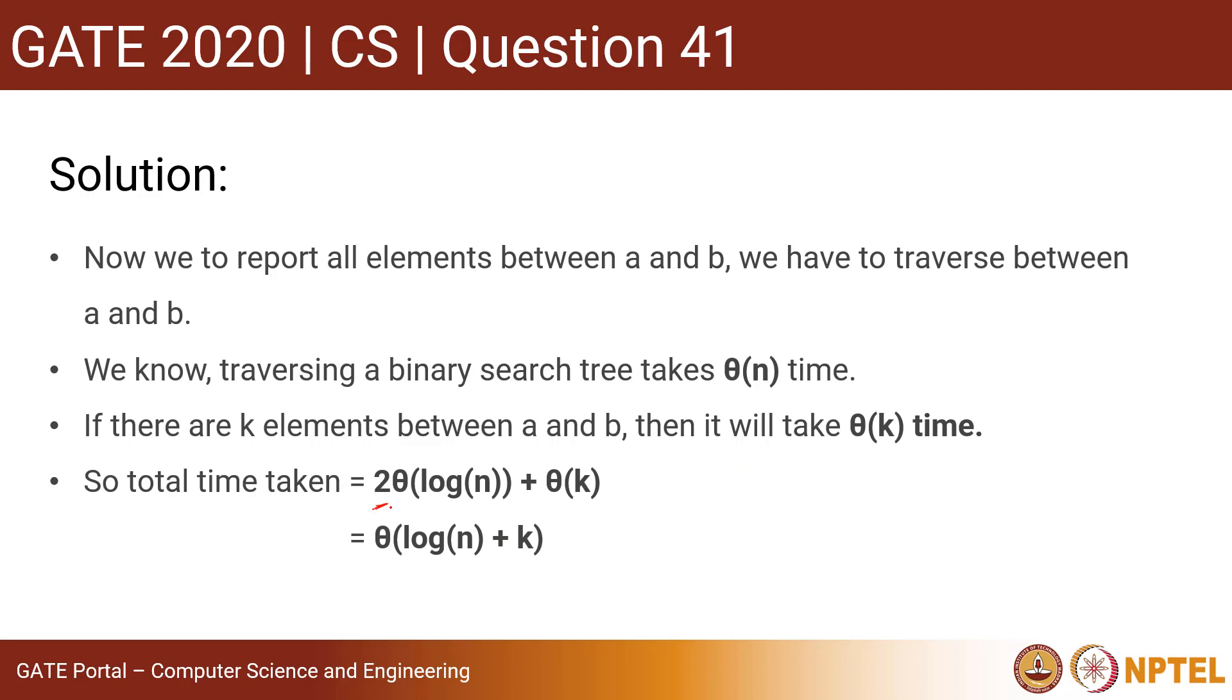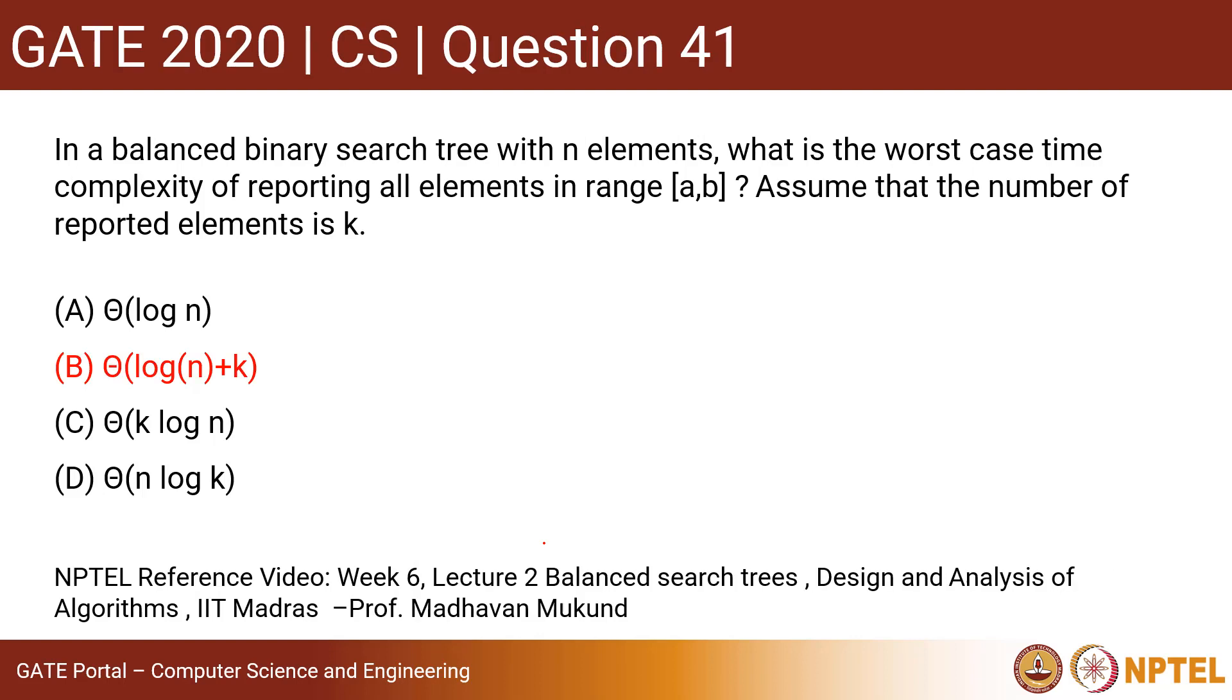Here 2 is a constant, so we know that in asymptotic notations we can omit the constants. So the answer will be Θ(log n + k). So option B will be the correct answer. Thank you.